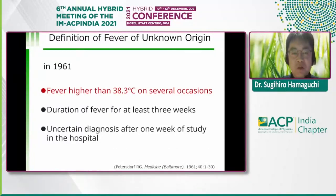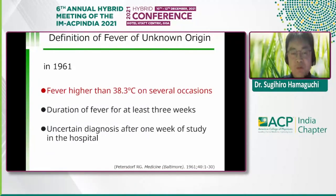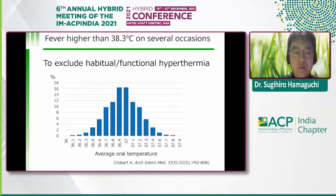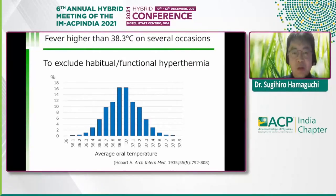The definition of FUO was first established 50 years ago in 1961 by Dr. Petersdorf et al. There are three criteria: number one, fever higher than 38.3 degrees Celsius on several occasions; number two, duration of fever for at least three weeks; and number three, uncertain diagnosis after one week of study in the hospital. The first criterion exists to exclude habitual or functional hypothermia — studies of healthy persons found no one with body temperature higher than 38.3 degrees Celsius.